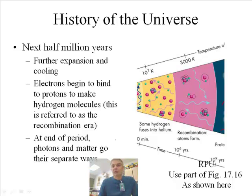All right, now we're going to jump a whole many years, ten to the sixth years, half a million years. We get further expansion and cooling, the electrons bind to the protons to make the hydrogen molecules, so now we're making lots of hydrogen. They call this the recombination era.